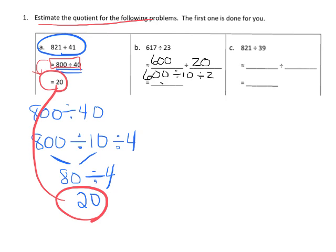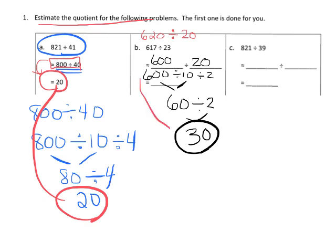So 600 divided by 10 gives us 60. 60 divided by 2 gives us 30. So there's my estimation. Of course, there's other ways we could have estimated. We could have estimated this to be 620 divided by, and then change 23 to 20 and done the math, and done our similar steps. We would have ended up with a slightly different estimated quotient, and that's okay too.